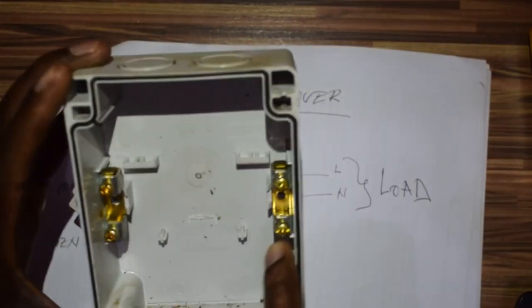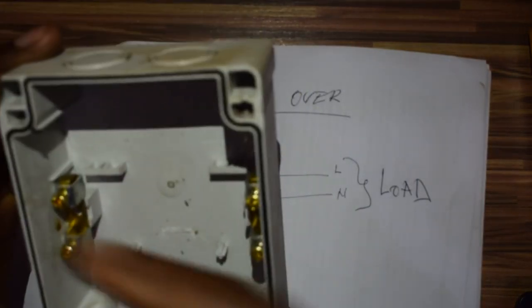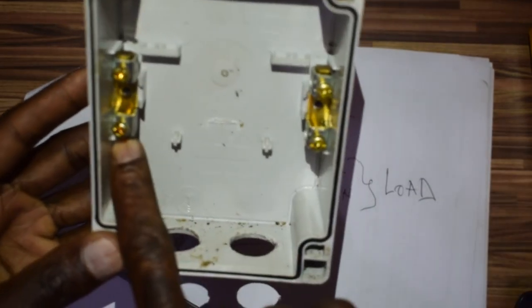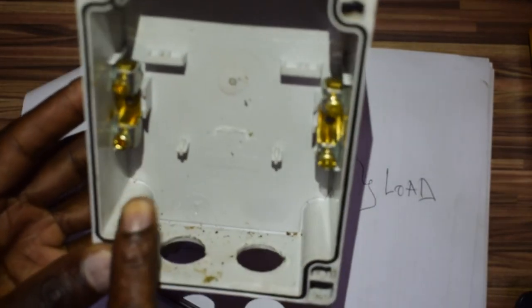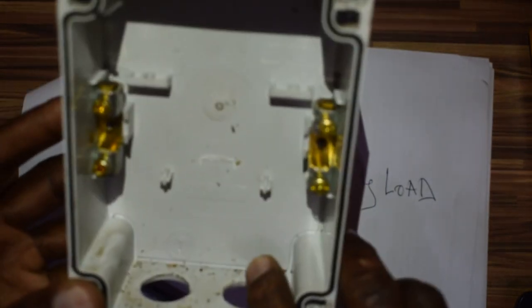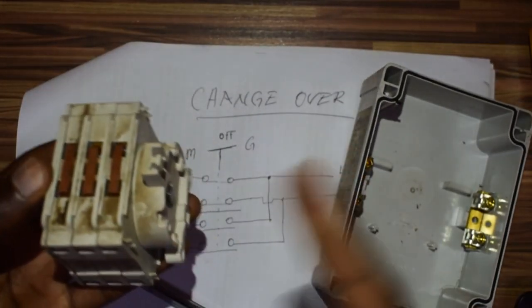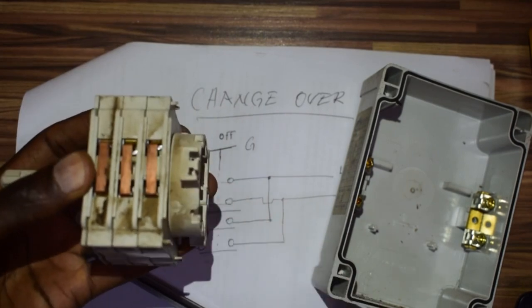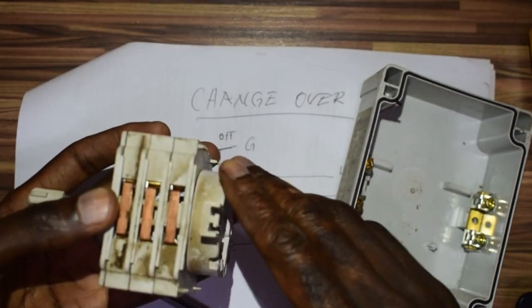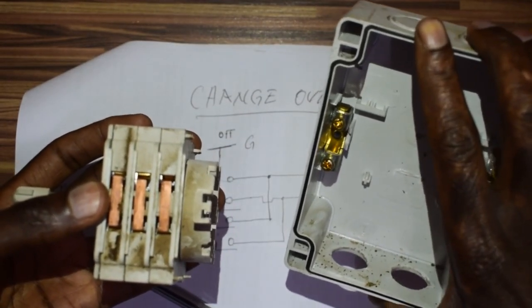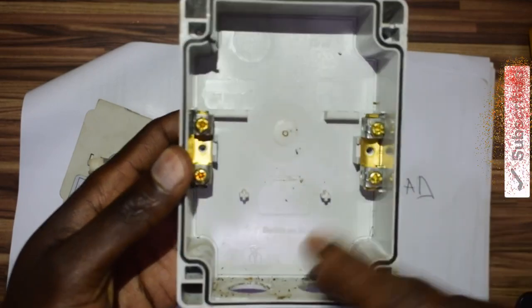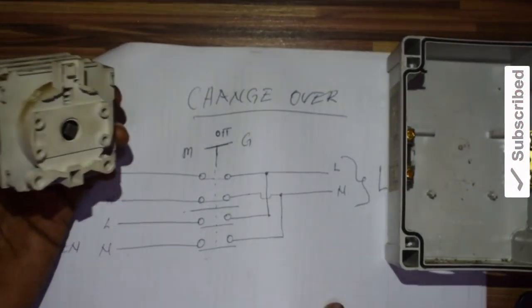In case you're using it for three phase, they've given you these two contacts - you can use one for neutral and the other for earth if you want. But normally in changeover, we like to break everything. If you're breaking, you have to break all the lines and the neutral. It's good that way. But if you don't care about that, you can just feed in your neutral here and your earth here.